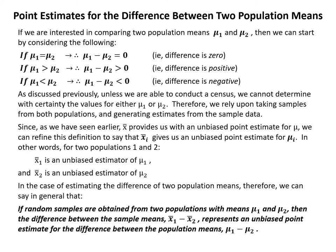If we are interested in comparing two population means mu 1 and mu 2, we can consider the following. If mu 1 equals mu 2, then mu 1 minus mu 2 equals 0. If mu 1 is greater than mu 2, then mu 1 minus mu 2 is greater than 0 and the difference is positive. And if mu 1 is less than mu 2, then mu 1 minus mu 2 is less than 0, which means the difference is negative.